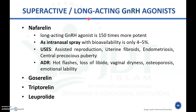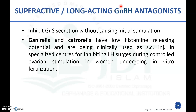Other super-active long-acting GnRH agonists include goserelin, triptorelin, and leuprolide. GnRH antagonists are long-acting gonadotropin releasing hormone antagonists; by using these, gonadotropin secretion can be inhibited without causing initial stimulation. Examples of GnRH antagonists include ganirelix and cetrorelix.